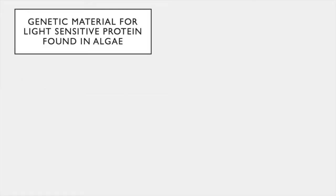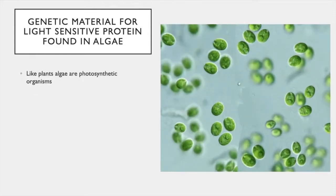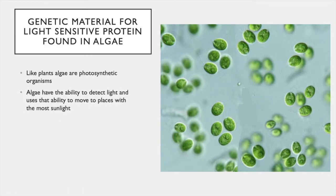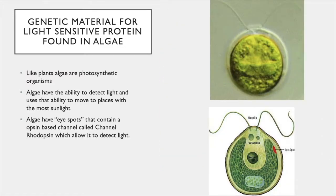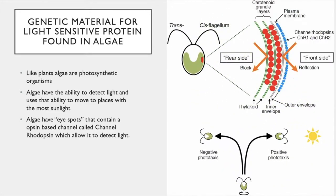Genetic material for a light-sensitive protein was also found in algae. Like plants, algae are photosynthetic organisms, which means they need sunlight to grow. Algae have the ability to detect light and use that ability to move to places with the most sunlight. Algae have eye spots that contain an opsin-based channel called channelrhodopsin, which allows them to detect light. The channelrhodopsin protein is located on the membrane above the eye spot. Below that portion of the plasma membrane is a carotenoid layer that reflects light so that channelrhodopsin only senses light from one side of the algae. The algae uses that signal to move either toward or away from light sources.